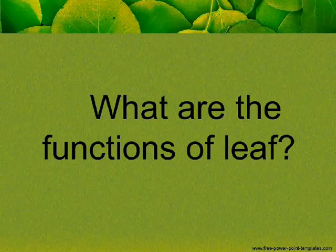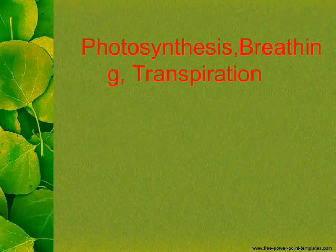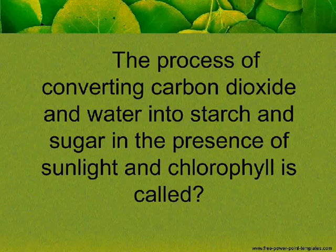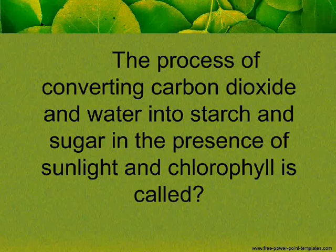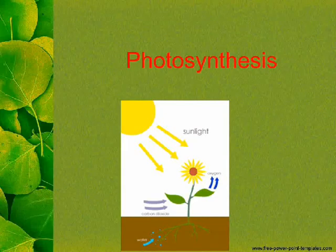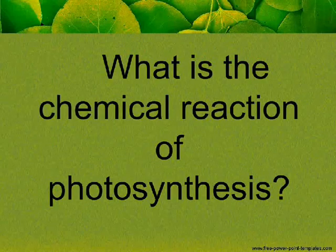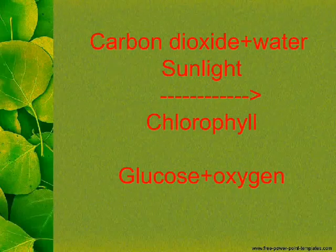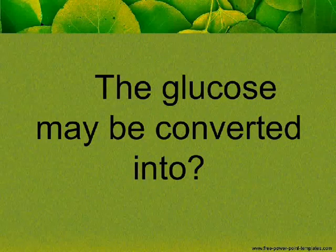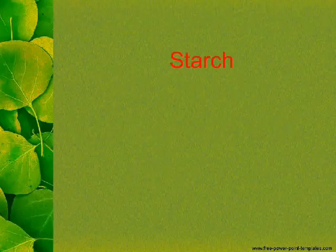What are the functions of a leaf? The main functions are photosynthesis, breathing, and transpiration. The process of converting carbon dioxide and water into starch and sugar in the presence of sunlight and chlorophyll is called Photosynthesis. The chemical reaction is: carbon dioxide plus water, in the presence of sunlight and chlorophyll, gives glucose plus oxygen. The glucose may be converted into starch.